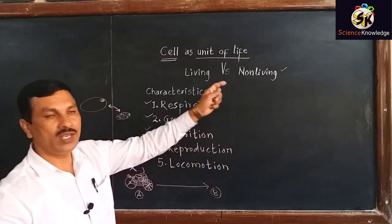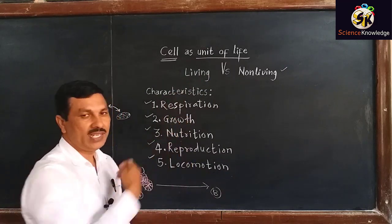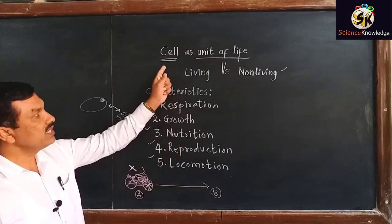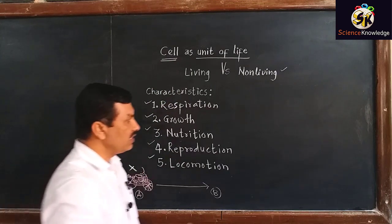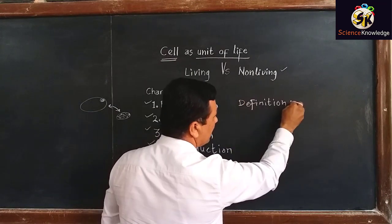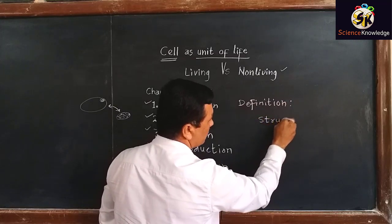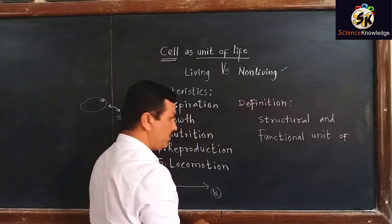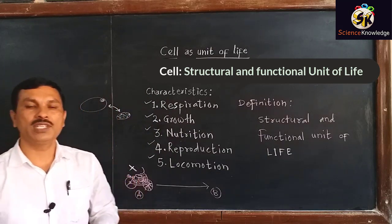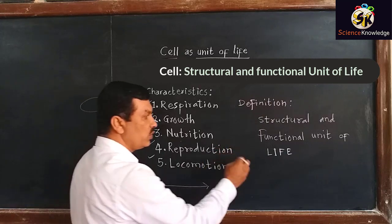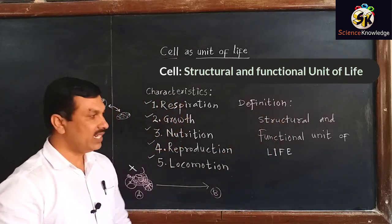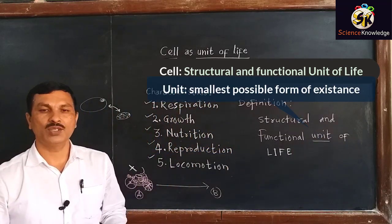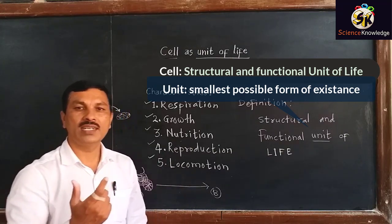So this is the difference between living and non-living things. On the basis of these parameters, we can divide objects into two broad categories. Now coming towards the definition of a cell: a cell is defined as the structural and functional unit of life. Now why is it called a structural unit and functional unit? Before that, we will try to understand what is meant by 'unit' — it is the smallest structure or smallest form in which a particular thing appears.